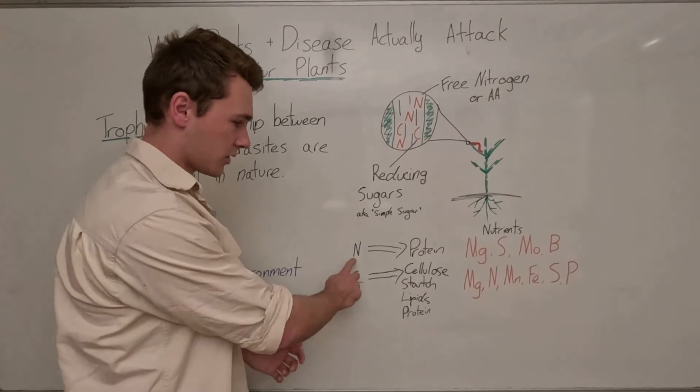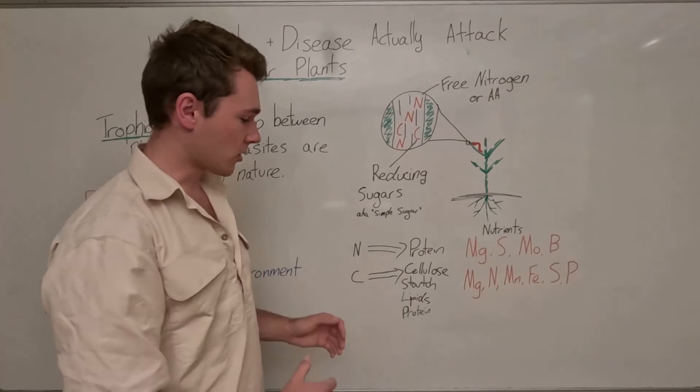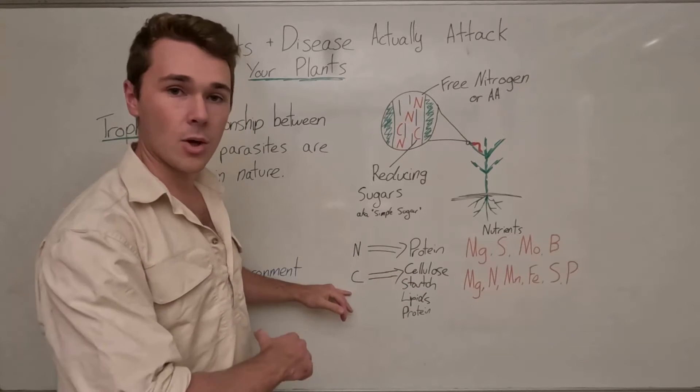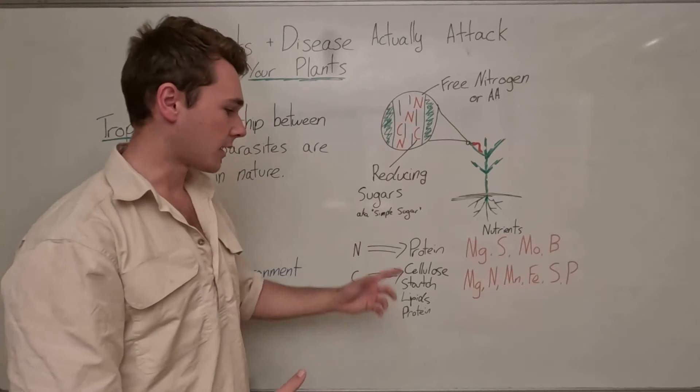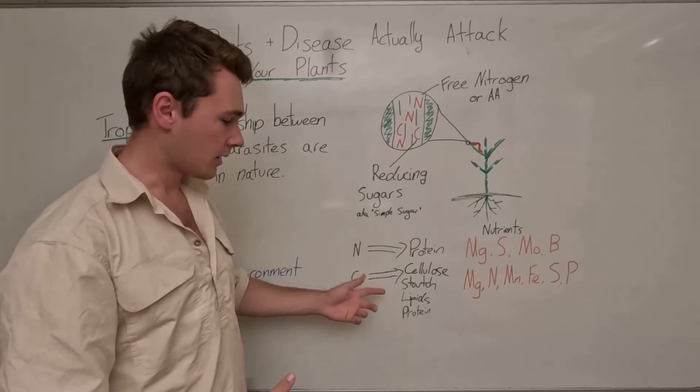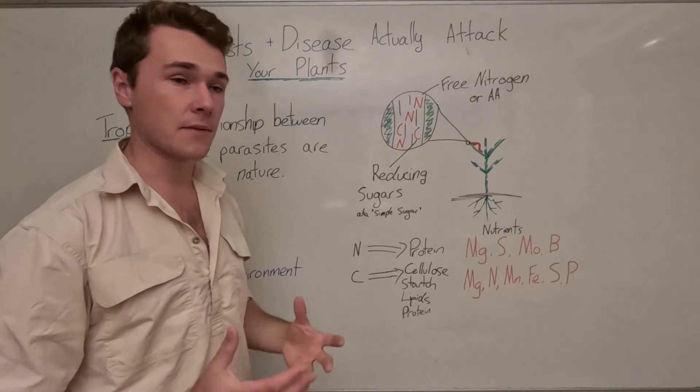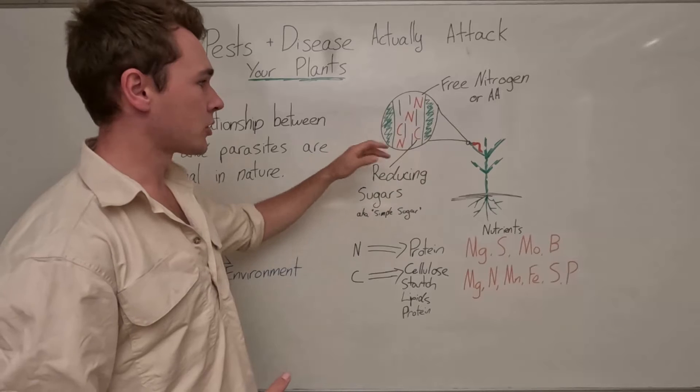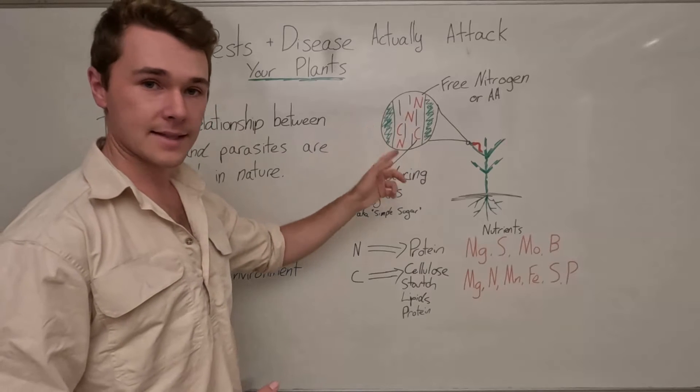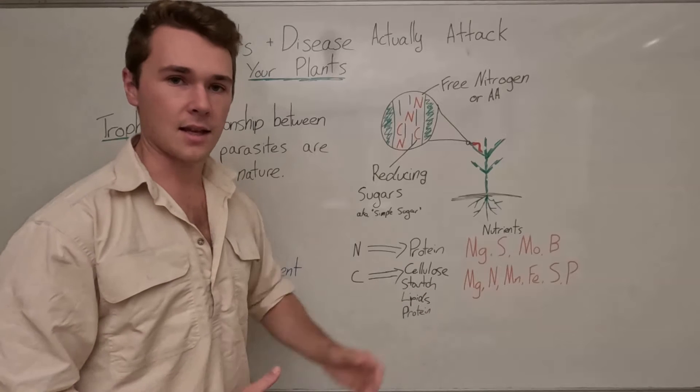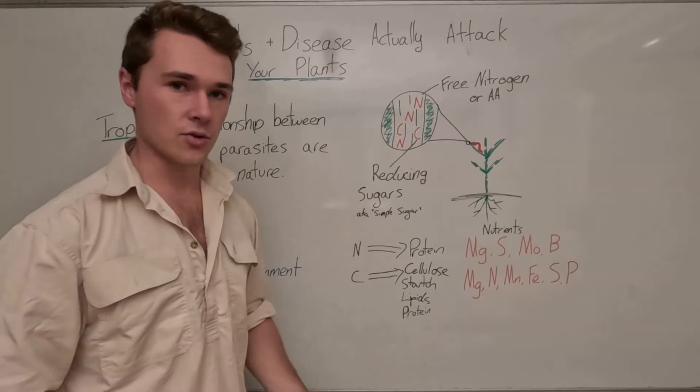Likewise, when converting nitrogen into proteins, we want to make sure our carbohydrates or our simple sugars get converted into complex structures like cellulose, starch, lipids and proteins. So when this is occurring, when this is happening really efficiently, there should be very little nitrogen and reducing sugars in our plant's sap, making the plant really unfavorable for our insects to eat because they simply won't get any nutrition from it.